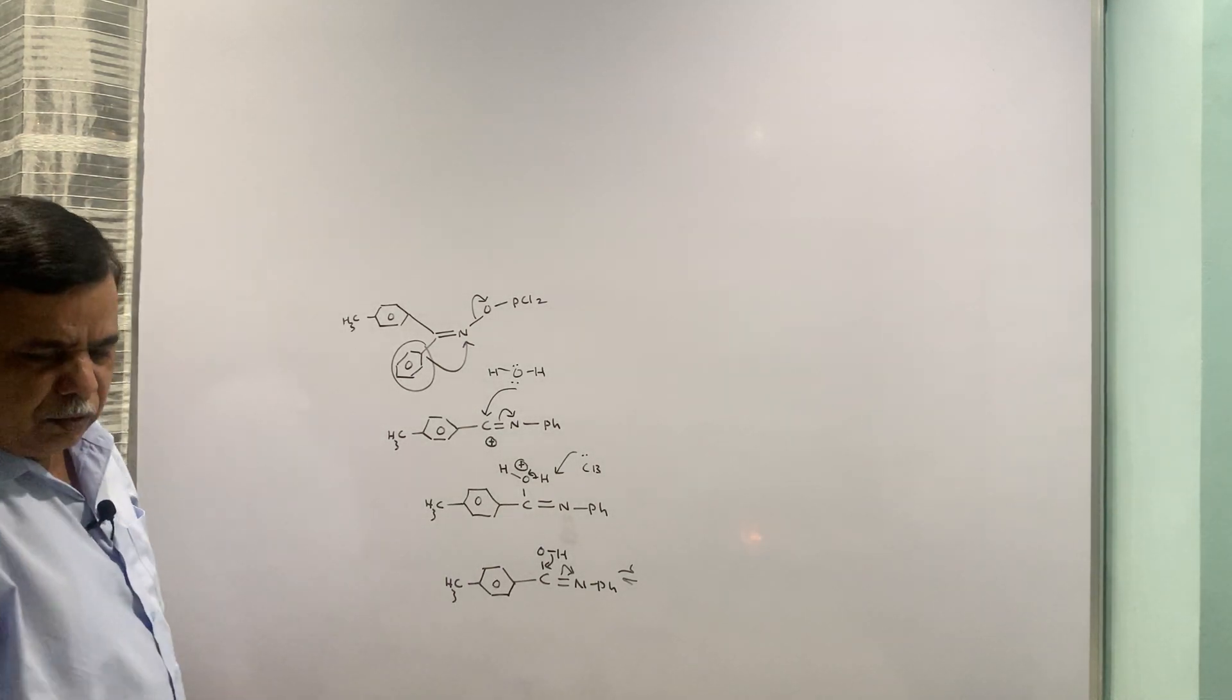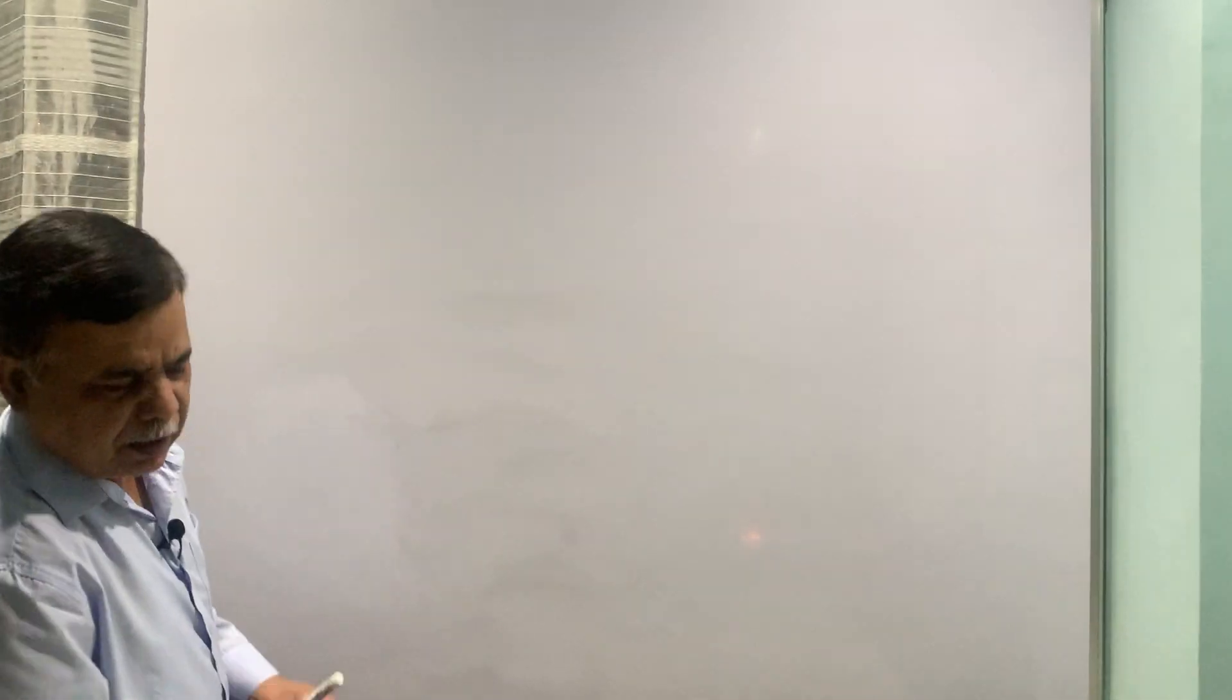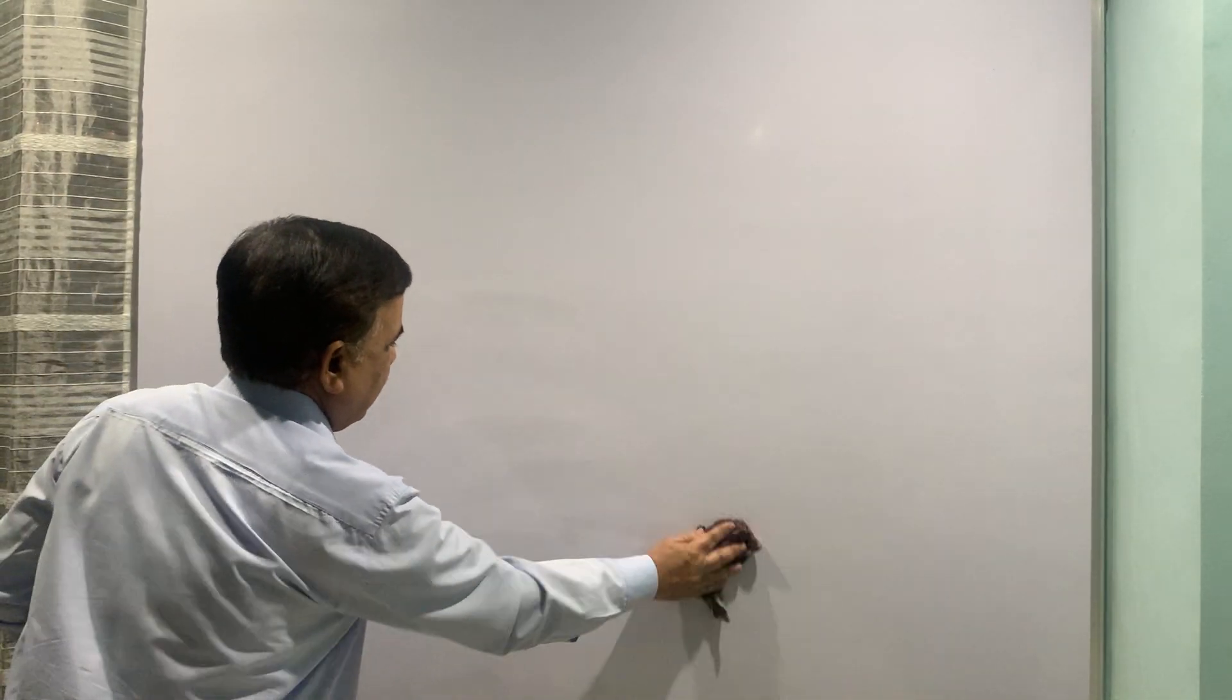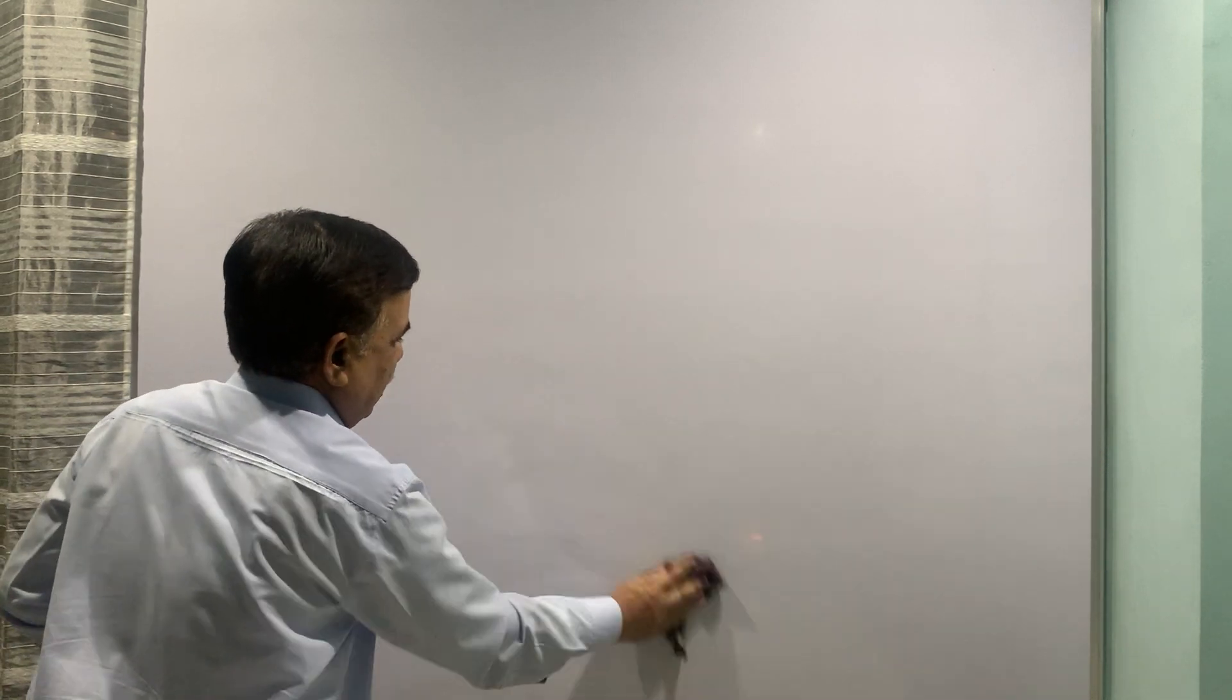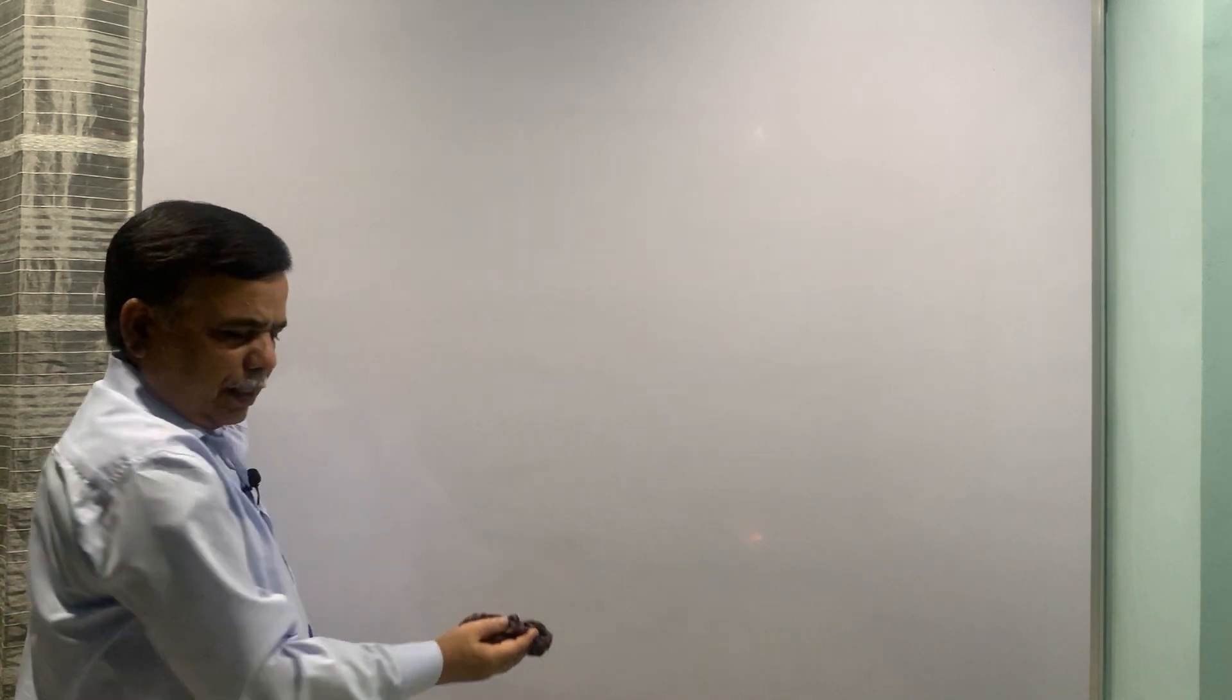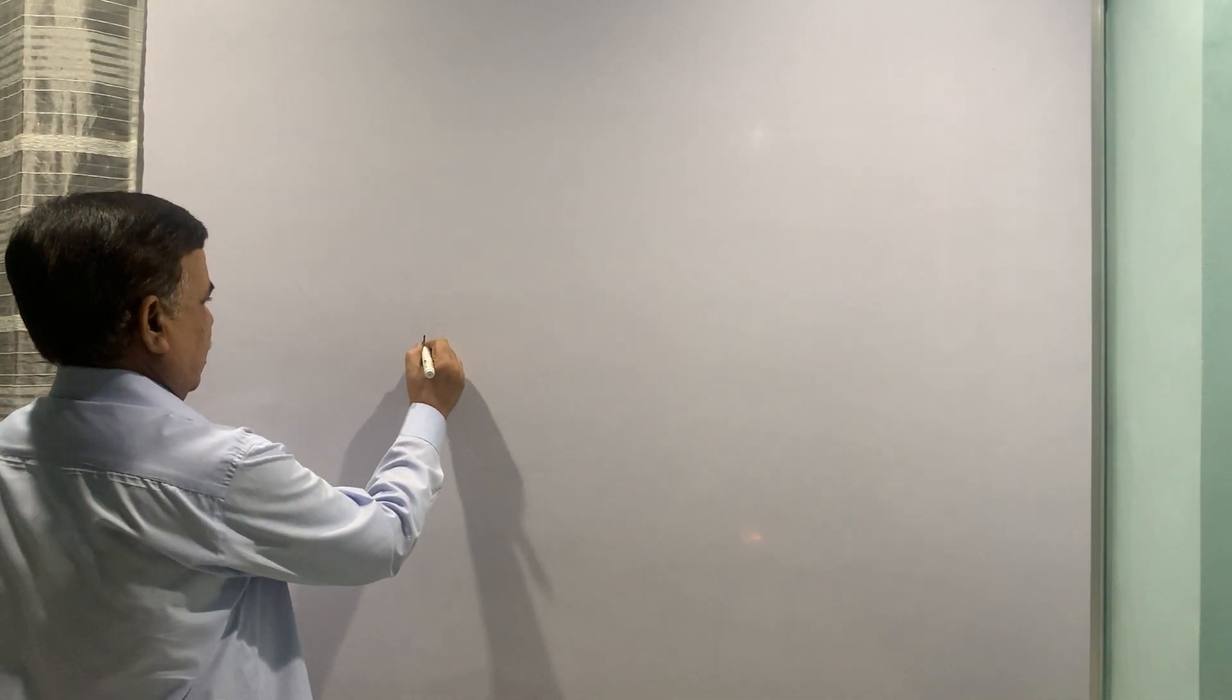Moving on to next example. This is your classical Beckmann rearrangement wherein the oxygen OH is transformed into some leaving group which is better than OH. And that is how the reaction can take place.